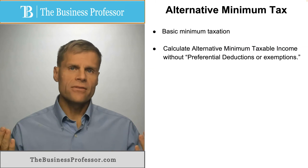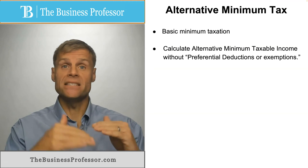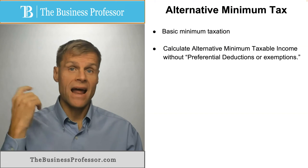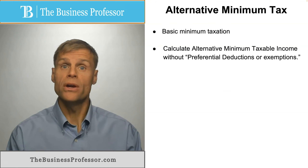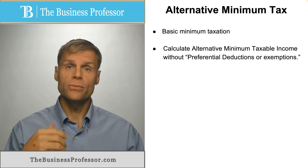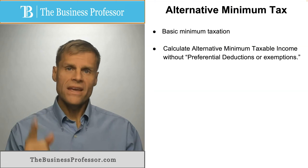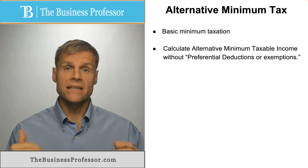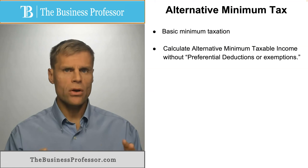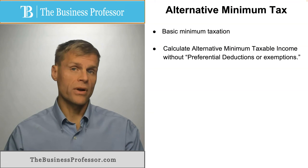If you do an alternative calculation for the alternative minimum tax liability and it is more than your regular or traditional tax liability, you would pay that higher amount, or you'd add that difference to your tax liability. To calculate the alternative minimum tax, you first calculate all of your sources of taxable income. Then you do not reduce that income by as many preferential deductions — there are still some deductions available, but basically you assume that there are no preferential deductions.